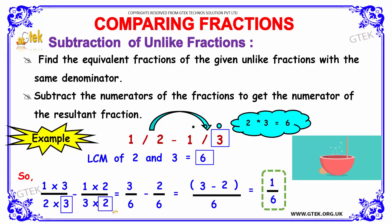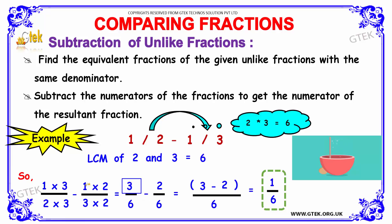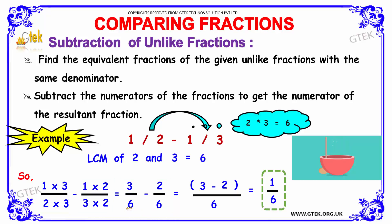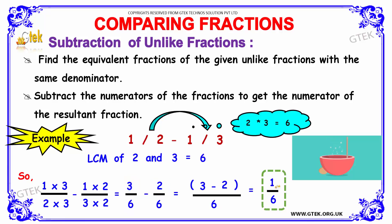We multiplied 3 with the first term and 2 with the second term. On multiplying, we get 1 into 3 equals 3, and 1 into 2 equals 2. Since we have equated the denominator to 6 for both terms, the denominator is now common. So we can subtract: 3 minus 2 equals 1. The answer is 1 divided by 6.